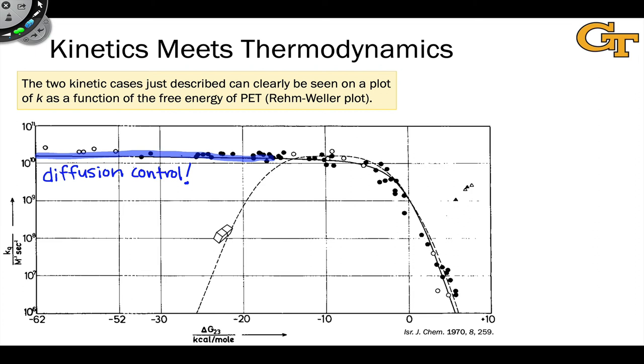As we move from strongly exergonic PET toward not-so-exergonic and endergonic PET, with delta G greater than zero, we start moving into what we might call the activation control region, where the rate constant of quenching is controlled by the activation energy of the reaction, which for an endothermic PET process is at least as large as the delta G.